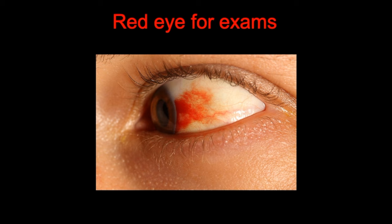In this video we're going to be focusing on this which is a subconjunctival hemorrhage, and that's where you've got blood that appears in the white of the eye.